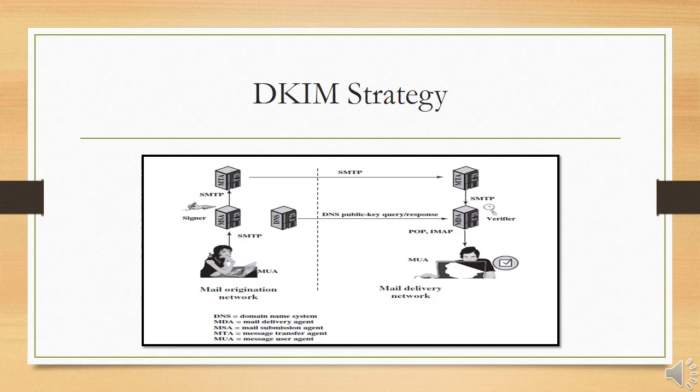Mail that originates from somewhere else but claims to be from a given domain will not pass the authentication test and can be easily rejected. This approach differs from that of S/MIME as well as PGP, which use the originator's private key to sign the content of the message. The motivation for DKIM is based on the following reasons.